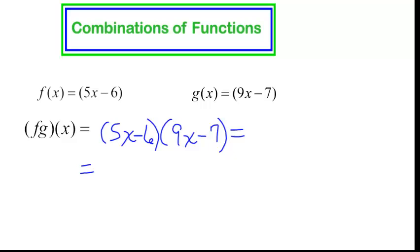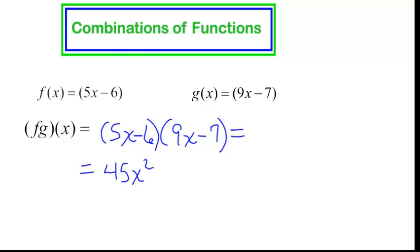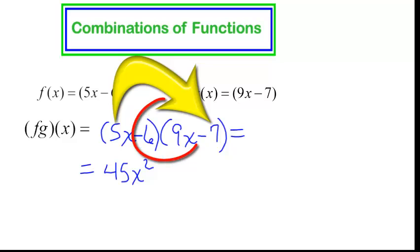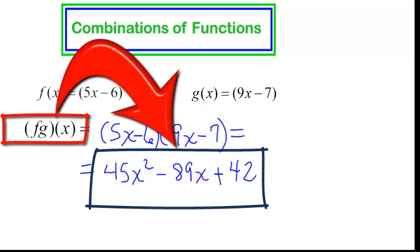This is a binomial times a binomial. I can use FOIL. Our first term: that will be 45x squared. Outer terms will be negative 35x. Inner terms will be negative 54x. When I add those together, I get negative 89x. I did skip that step, but you should be used to FOIL by now. The last term, negative 6 times negative 7, will be positive 42. So (f·g)(x) is 45x squared minus 89x plus 42.